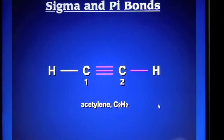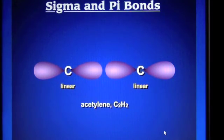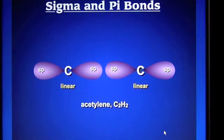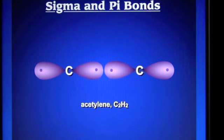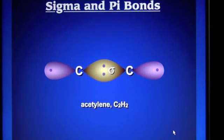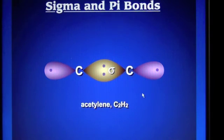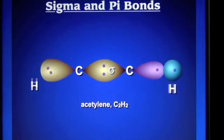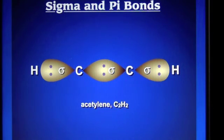Let's take a look at those two sp hybrid orbitals around each carbon. Each carbon has a valence of four, and two of those four valence electrons are placed into these two sp hybrid orbitals. When the electrons are in these sp hybrid orbitals we can overlap them and start forming sigma bonds. Overlapping the orbitals between the two carbon atoms gives our first sigma bond — the sharing of two electrons directly between the nuclei. Bringing in the surrounding hydrogen atoms creates two more sigma bonds, one on each side, for a total of three sigma bonds so far.